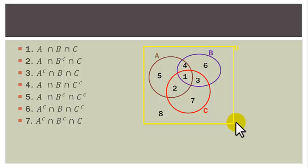Region 7 is A-complement intersection B-complement intersection C. Region 8 is A-complement intersection B-complement intersection C-complement — outside A, outside B, and outside C.